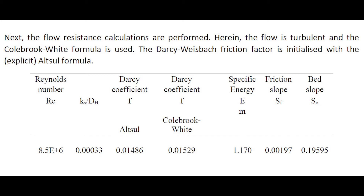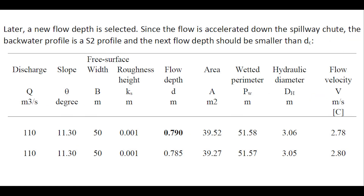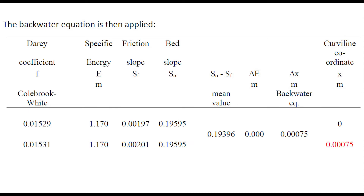Next, the flow resistance calculations are performed. Here, the flow is turbulent and the Colebrook formula is used. The Darcy-Weisbach friction factor is initialized with the explicit Altshul formula. Later, a new flow depth is selected. Since the flow is accelerated down the spillway chute, the backwater profile is the S2 profile, and the next flow depth in the downstream direction should be smaller than the critical flow depth. The backwater equation is then applied.